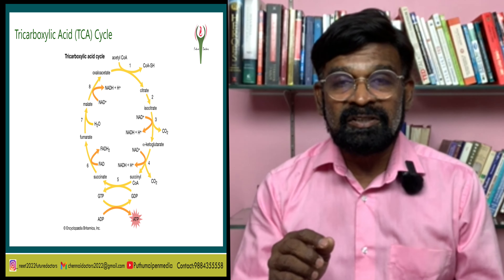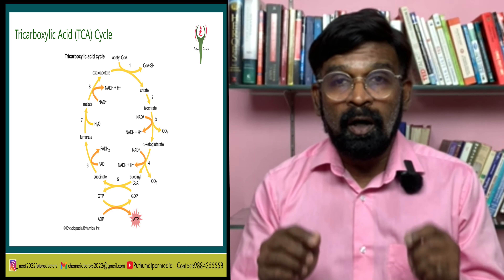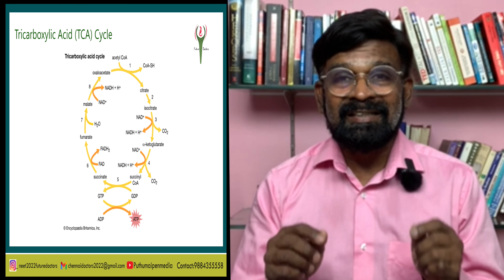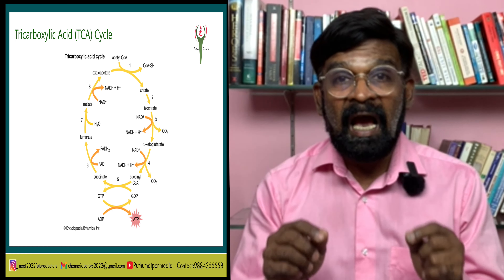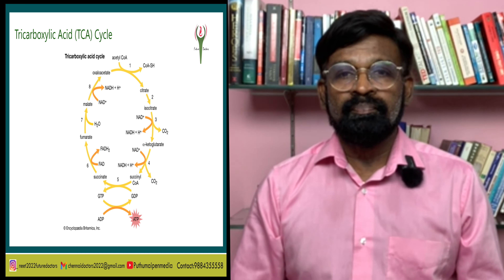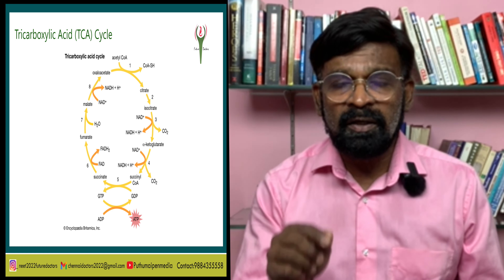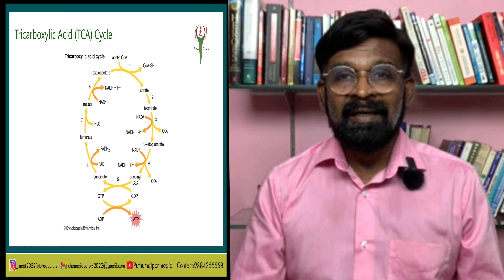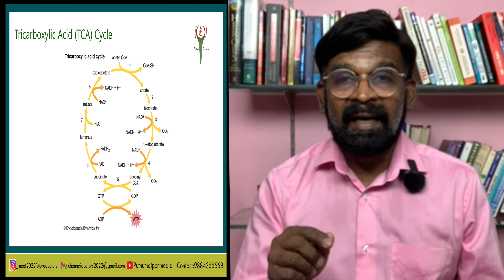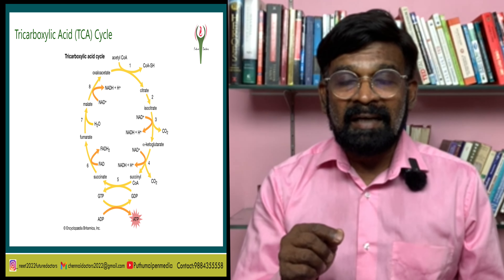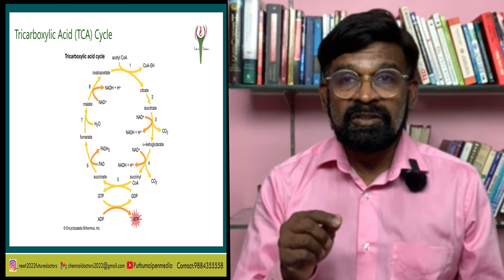The Krebs cycle starts with condensation of the acetyl group with oxaloacetic acid and water to yield citric acid, a 6-carbon compound. This is the first stable product of the cycle, catalyzed by the enzyme citrate synthetase. CoA is liberated during this reaction. Citric acid then undergoes reorganization in two steps in the presence of the enzyme aconitase to form an intermediate.